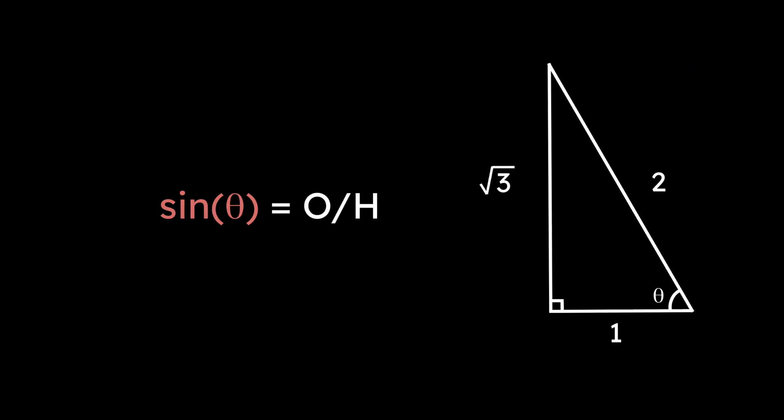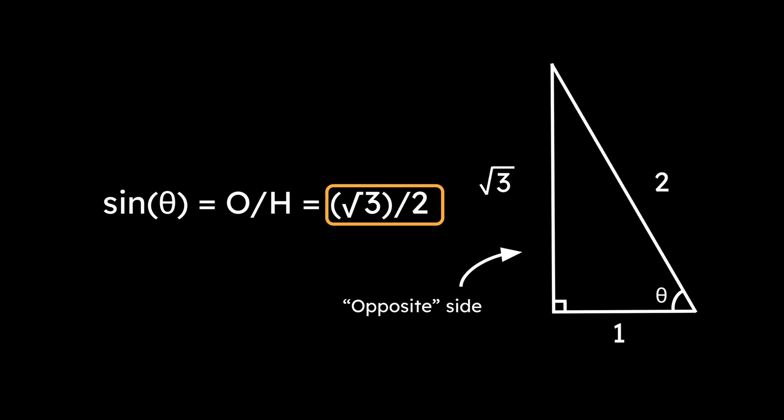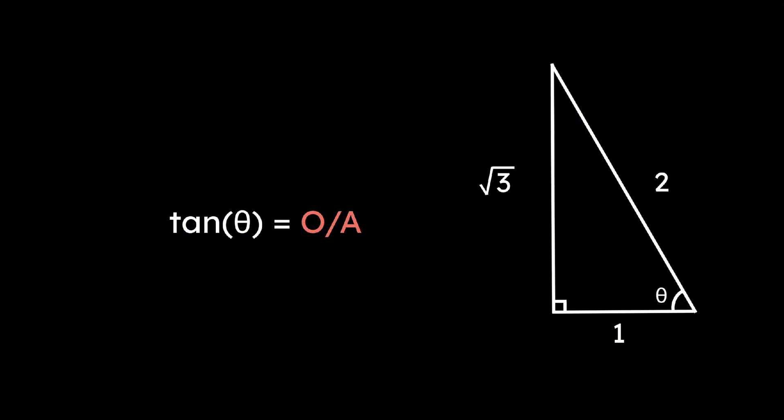Sine of theta would be the side opposite to the angle over the hypotenuse, or square root 3 over 2. Finally, tangent is opposite over adjacent, or square root 3 over 1, or just square root 3.